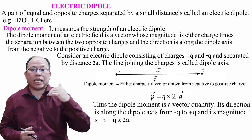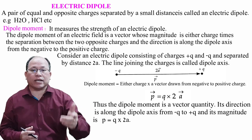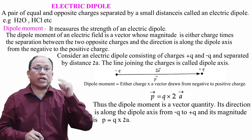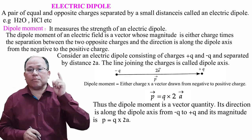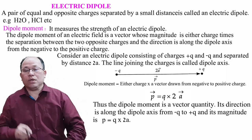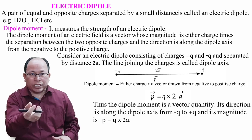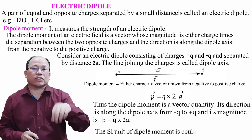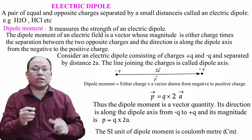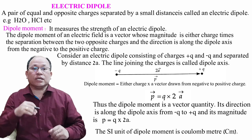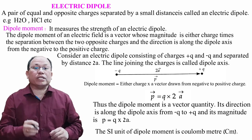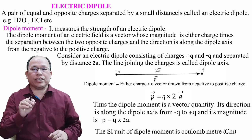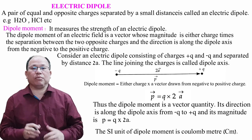Dipole moment is a vector quantity directed from −q to +q. The SI unit of dipole moment: the unit of charge is coulomb and the unit of distance is meter, so the SI unit of dipole moment is coulomb-meter, represented as C·m.